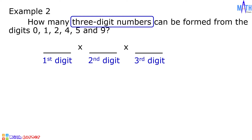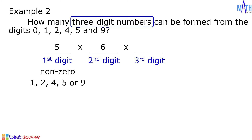There is a restriction for the first digit. To form three-digit numbers, the first digit must be non-zero. So there are only five options for the first digit: 1, 2, 4, 5, or 9. There is no restriction for the second and third digits. For the second digit, there are six options. For the third digit, there are also six options. Five times six times six is equal to 180.